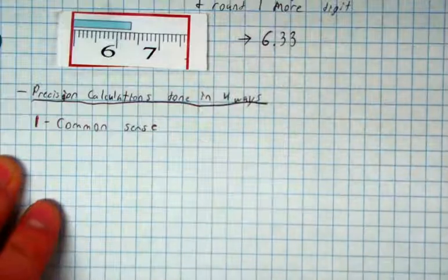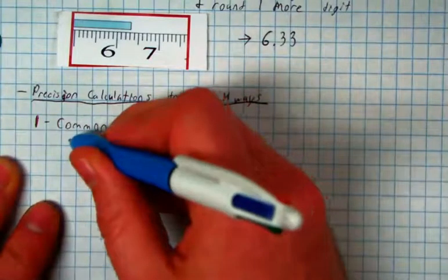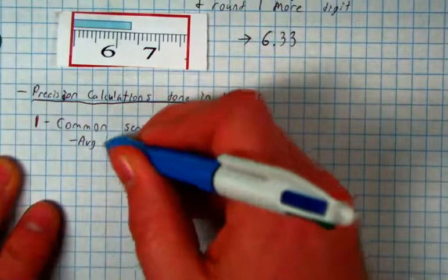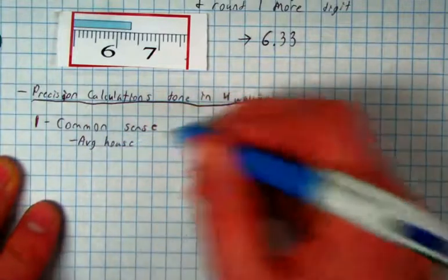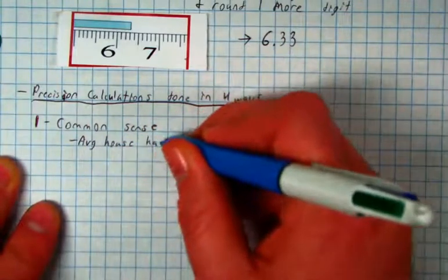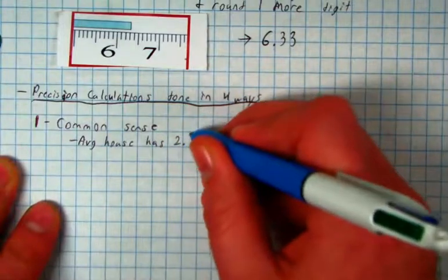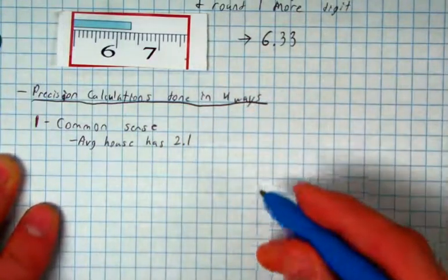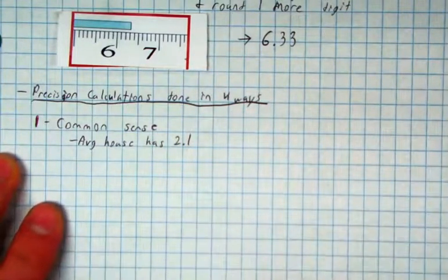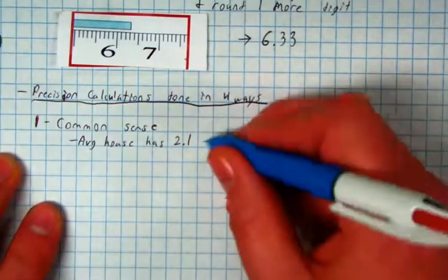For example, if I say the average household has 2.1 children, I don't think there's any 0.1 kids in any house. That'd be really weird and creepy, right? 2.1 kids.